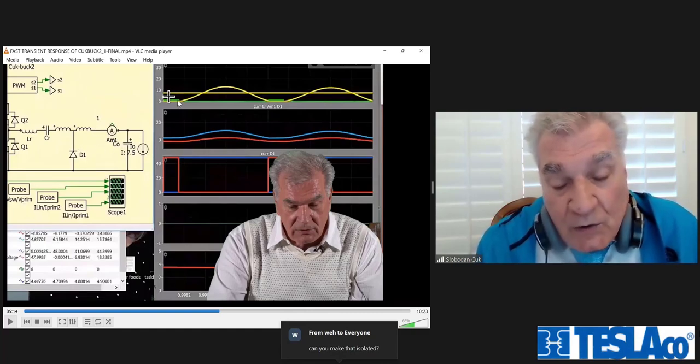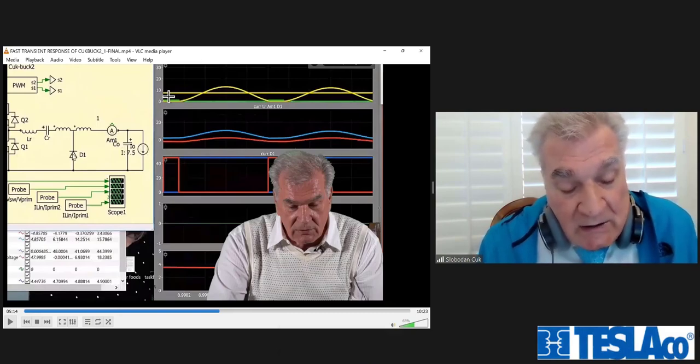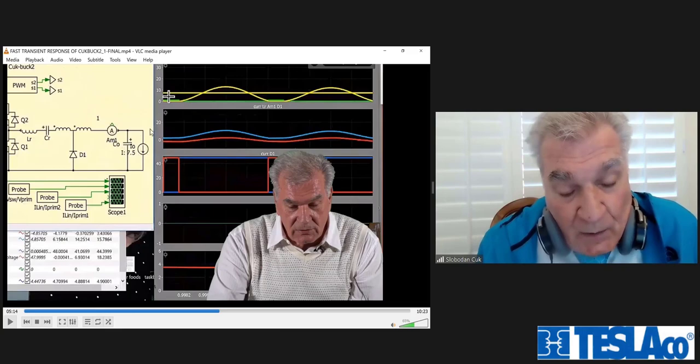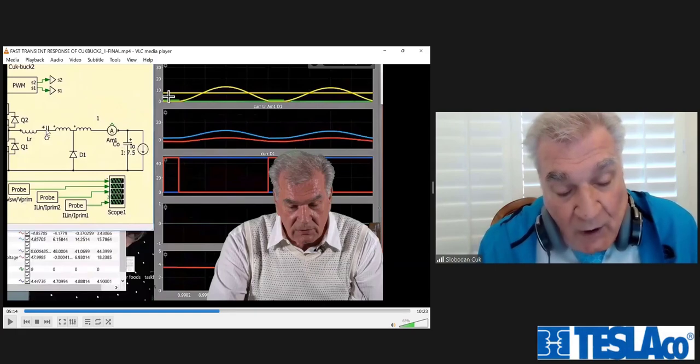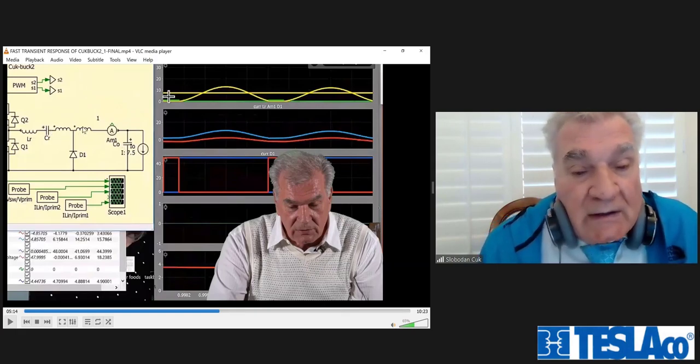It never goes into negative part. But this is zero switching losses and has zero ripple on the output, literally. And the only capacitor on the input is reduced in the size by turns ratio. If this 10 to 1 turns ratio, this capacitor is having 10 times smaller current. This is 100 amp. This will see only 10 amps on input. So everything is there.